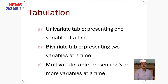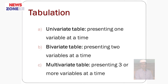Tabulation. There are three types of tables: univariate tables, bivariate tables, and multivariate tables. Univariate tables are tables in which we present one variable at a time. Bivariate tables are tables in which we present two variables at a time. And multivariate tables are tables in which we present three variables at a time.